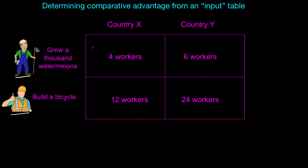Let's look at this table and discuss how it differs from the previous video. In this table, we are not given the number of units of output the two countries can produce. Rather, we are given the number of workers needed to produce a single unit of output — specifically, a thousand watermelons or a single bicycle. With this information, we can calculate opportunity costs and determine who has the comparative advantage.